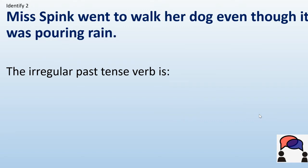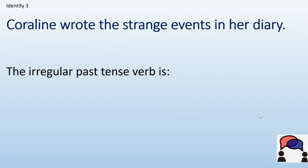Next one: Miss Spink went to walk her dog even though it was pouring rain. The irregular past tense verb here is went — that verb completely changes. Another one: Coraline wrote the strange events in her diary. The irregular past tense verb here is wrote. So to write, but in the past tense it becomes wrote.